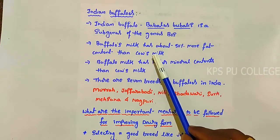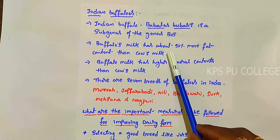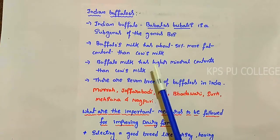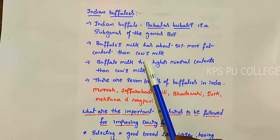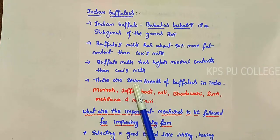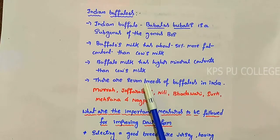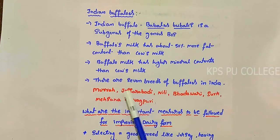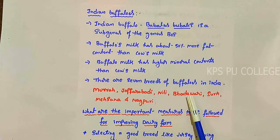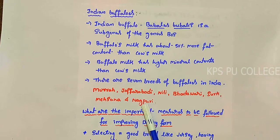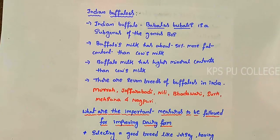Buffalo milk has more concentration of fat and higher mineral content when compared to cow milk. There are seven breeds of buffaloes in India: Murra, Jafarbadi, Nili, Badwari, Surthi, Mehasana, and Nagpuri.